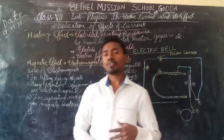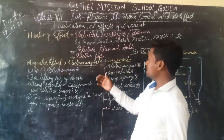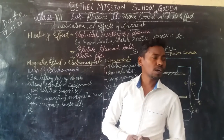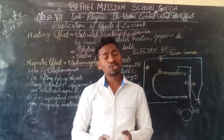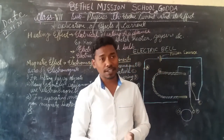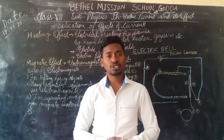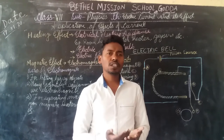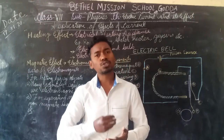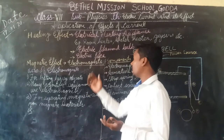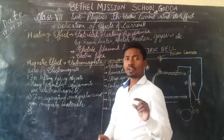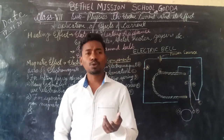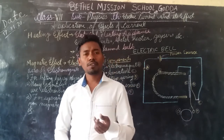We also have the electric filament bulb, which is a different type of electrical device. It produces both heat as well as light — it gets heated up so much that it can produce light also. So we are using the heating effect of electric current to produce light. The third application is the electric fuse, which you might have used in your household circuit. Fuse is a protecting device.